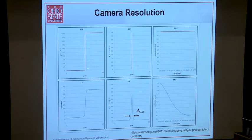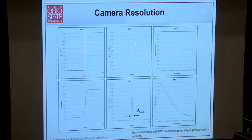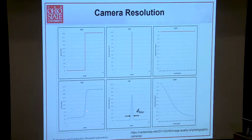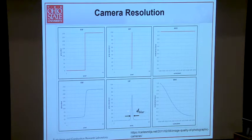If you had a perfect system, the edge spread function would give an infinitesimal spike as the line spread function — an infinitesimally thin blur spot. In a real system, you get a finite blur spot. The blur spot size increases with real systems.